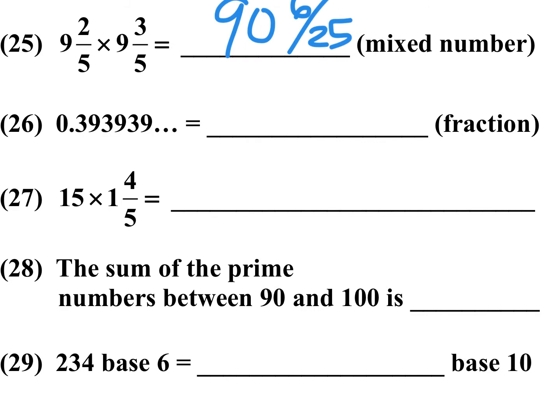Okay, problem number 26, 39, 39, 39, repeating 39s. Since it's repeating in two digits, you would write that as 39 over 99, but you have to reduce by 3, since 3 goes into 39 13 times, and 3 goes into 99 33 times. So the correct answer there should be 13 over 33.